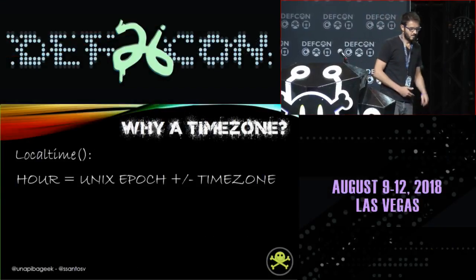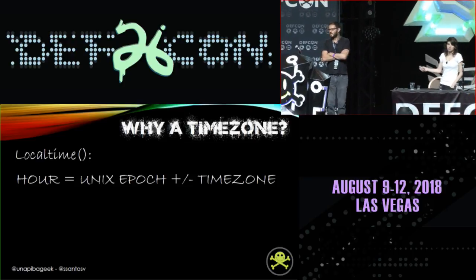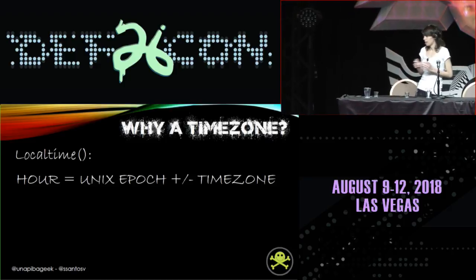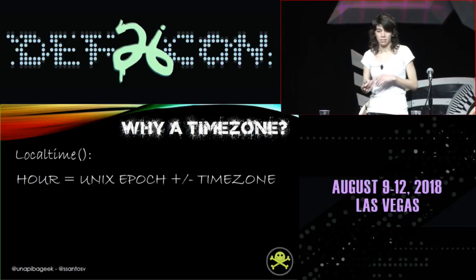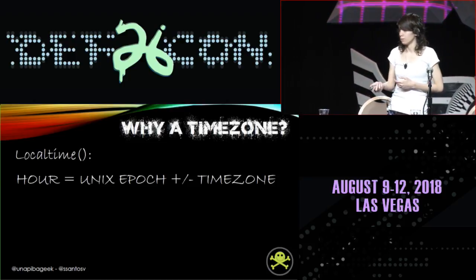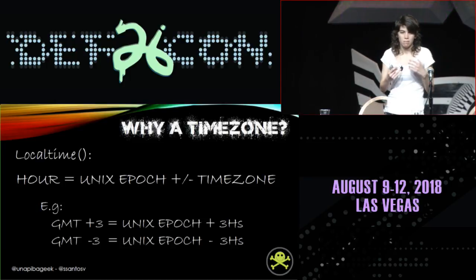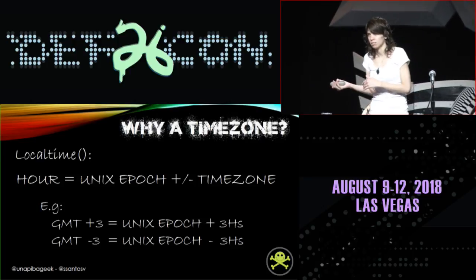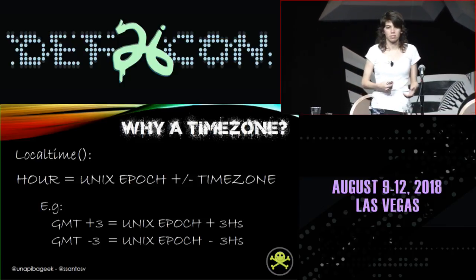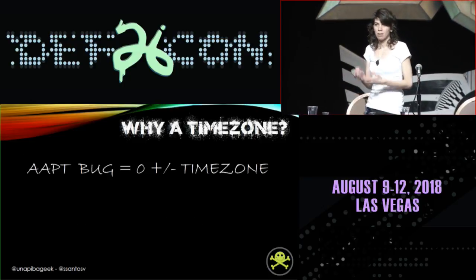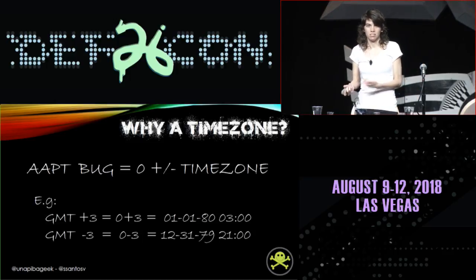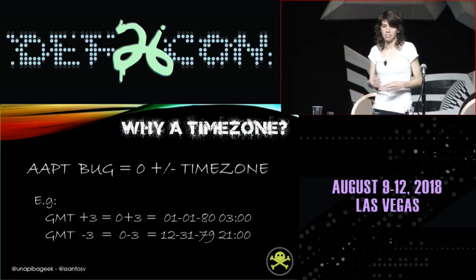We are convinced there is a bug inside AAPT, but why does this end in a timezone disclosure? The localtime() function makes a calculation to put the correct hour in the hours field — it takes the Unix epoch from the parameter, which is UTC+0, and adds or subtracts the time zone of the computer. For example, if the time zone is GMT plus three, it computes Unix epoch plus three hours. If the time zone is GMT minus three, it subtracts three hours. But in AAPT, localtime() is making that sum or subtraction over zero, so GMT plus three is just zero plus three — that's why you see the number three in the hour field.